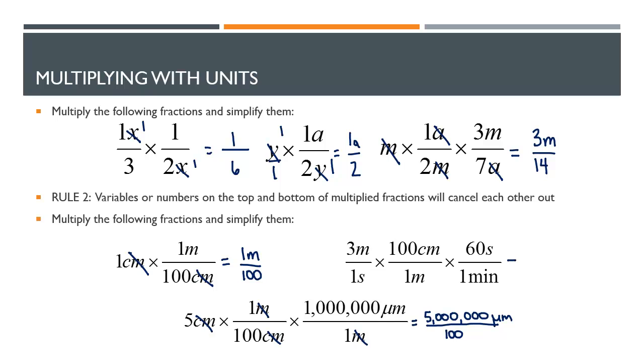And on this last problem we have 3 meters over 1 second, 100 centimeters over 1 meter, and 60 seconds over 1 minute. The units I can cancel are meters and seconds. So what I'm left with is 18,000 centimeters over minutes.